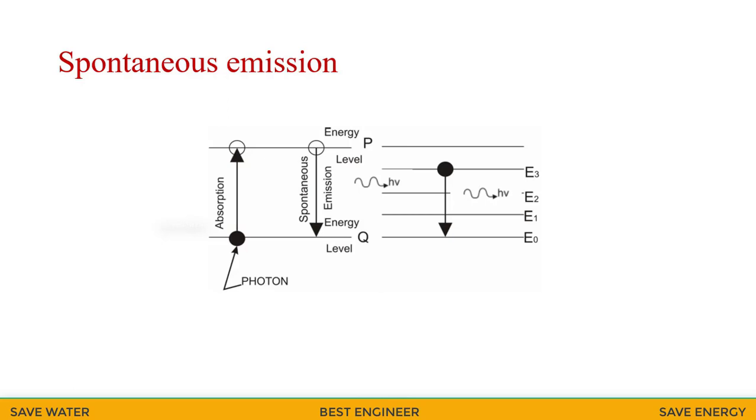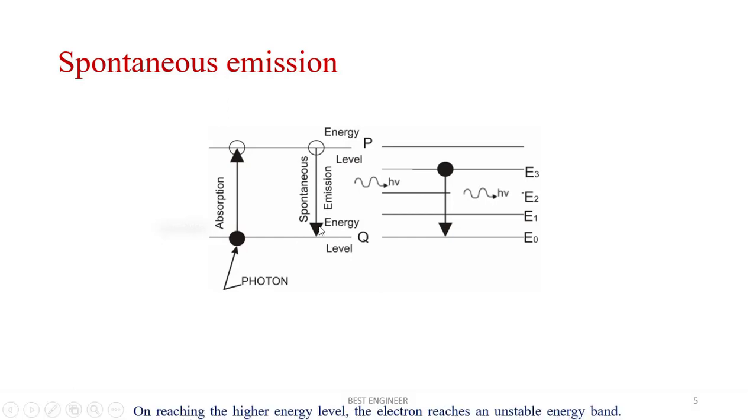Schematically, absorption of photons by an electron, the electron moves towards a level of higher energy to lower energy. On reaching the higher energy level, the electron reaches unstable energy bond here. And it comes back to the ground within very small time. The electron will move from the higher level energy to lower level energy at very small time. This is called spontaneous emission.